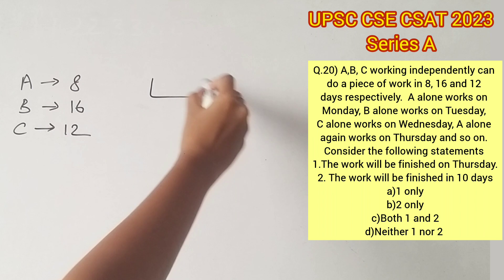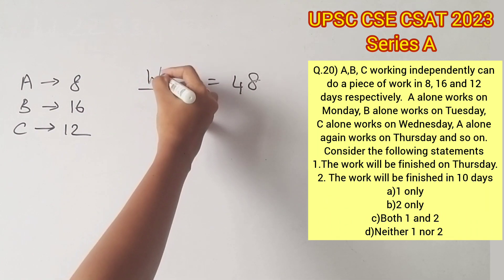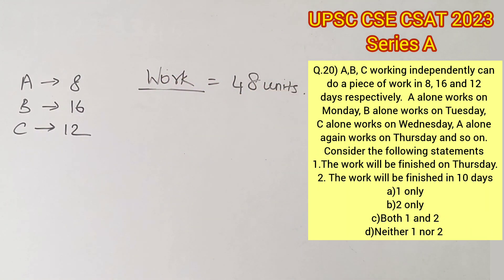Let's take the LCM of 8, 16, and 12. The LCM is 48. Now let's consider the work is of 48 units. From this we can easily find out how many units each one will complete in a single day.